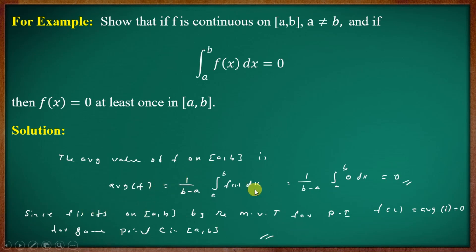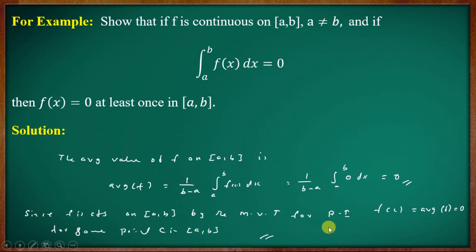If f is continuous on closed interval [a, b], by the mean value theorem for Riemann integrals, the integral from a to b of f(x) dx equals f(c) equals the average value of f equals 0, and c is in closed interval [a, b].